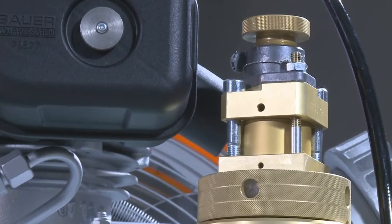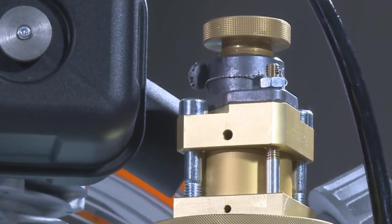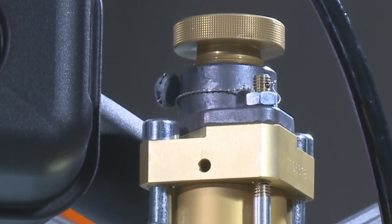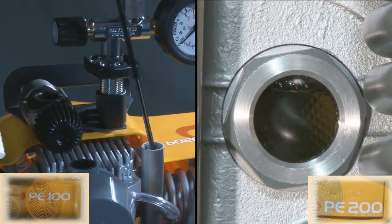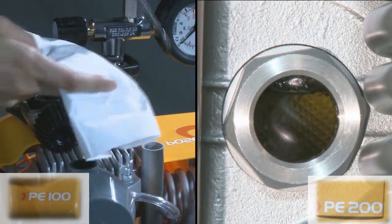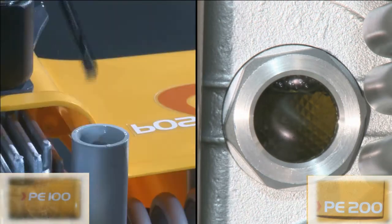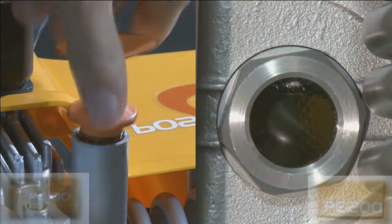Additionally, the sealed safety valves boost safety when the unit is in operation. Furthermore, it is easy and quick to check the oil level in both mobile units by either checking the scale on the oil dipstick or the integrated oil sight glass.